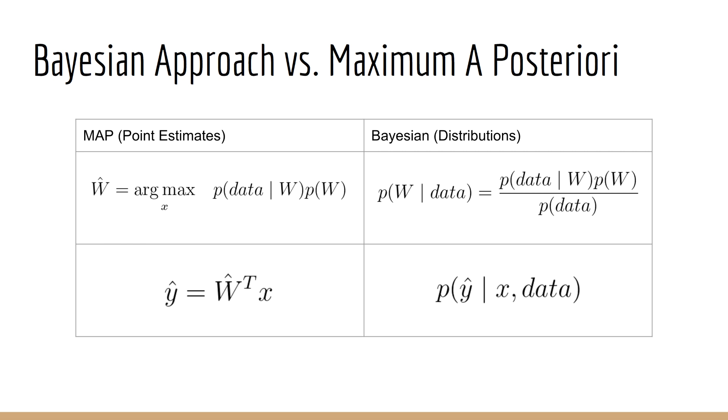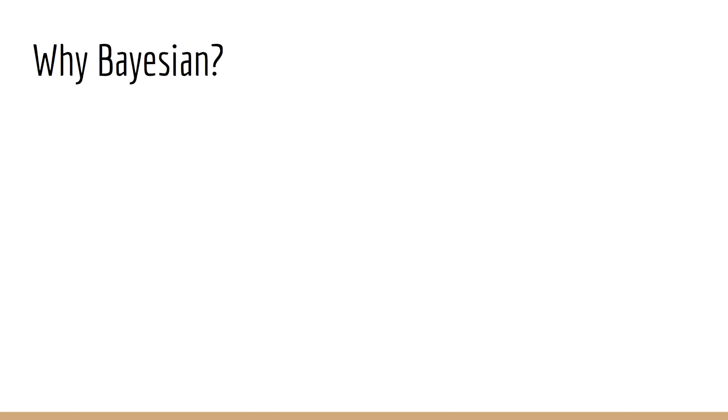Furthermore, the Bayesian method gives us a probability distribution for W, instead of just a point estimate. For making predictions, the story is the same. With classical machine learning, we only get a point estimate. With Bayesian machine learning, we get a distribution, which tells us more than just the expected value.